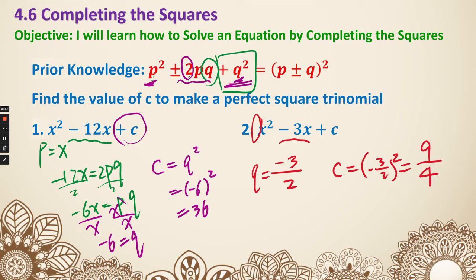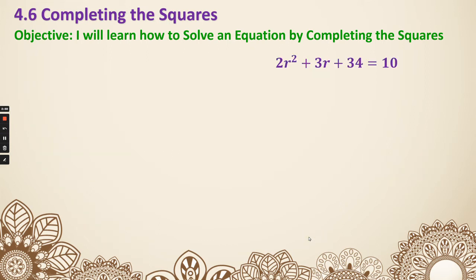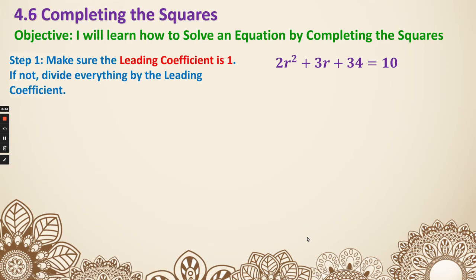Now let's look at the steps to solve equations by completing the square. Step 1: make sure the leading coefficient is 1. If it's not, divide everything by the leading coefficient. In this case the leading coefficient is 2, so we divide everything by 2.